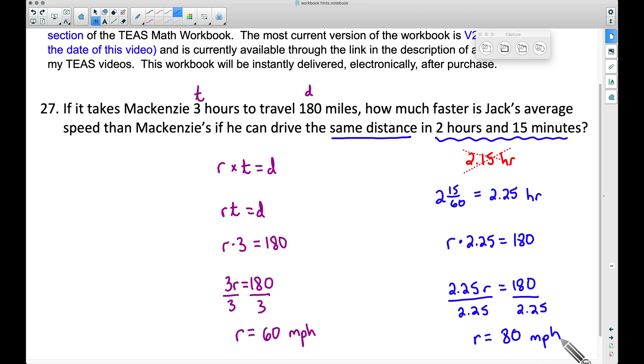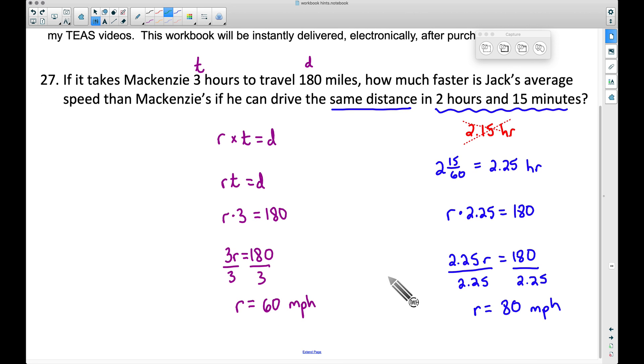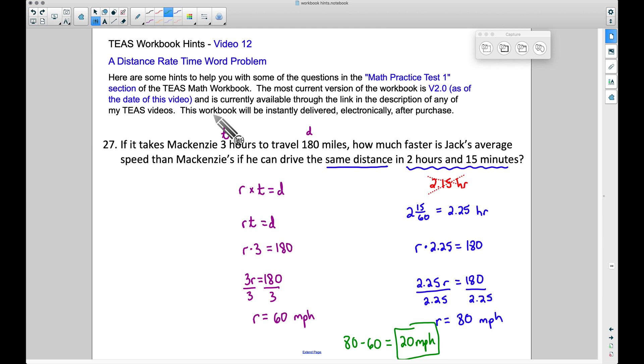Be careful. We still have not answered the correct question yet. The question says, how much faster is Jack's average speed than McKenzie's? Well, Jack was averaging 80 miles per hour. McKenzie was averaging 60 miles per hour. The difference between these two, which is going to be 20 miles per hour, that answers the question. You want to find a difference there. Therefore, our final answer to number 27 on the Math Practice Test 1 in the TEAS Math Workbook 2.0 is 20 miles per hour.